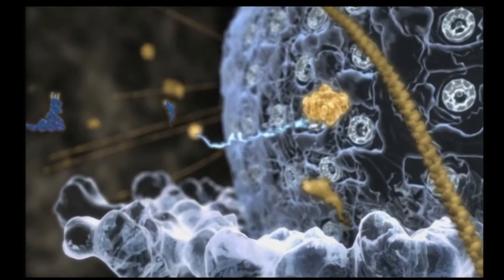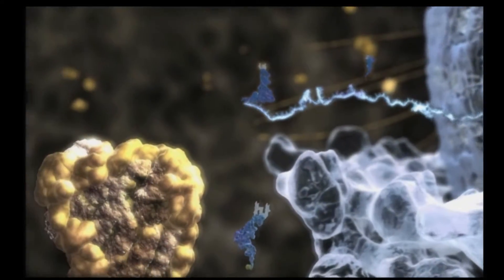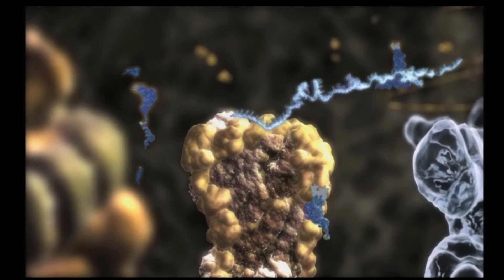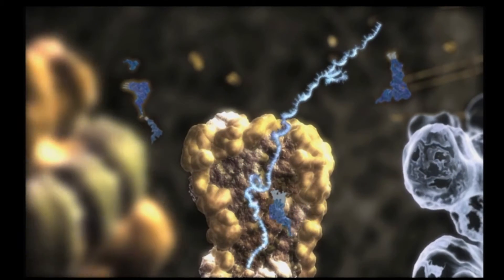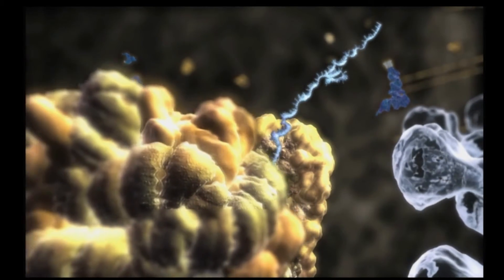Now we see the genetic assembly instructions on the messenger RNA approaching and arriving at a two-part chemical factory called a ribosome, the site of protein synthesis.